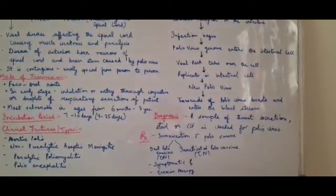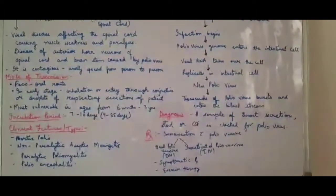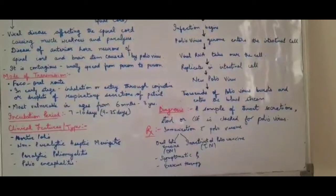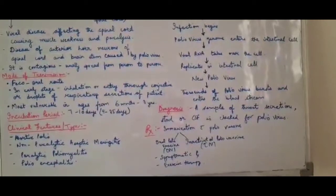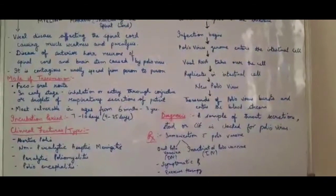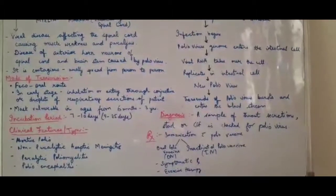In treatment, we do immunization for patients. There are two types of immunizations for polio vaccine: one is oral polio vaccine, and one is inactivated polio vaccine (IPV). You will know about oral polio vaccine - every December or January, drops are given to children on Sundays. That is for prevention.